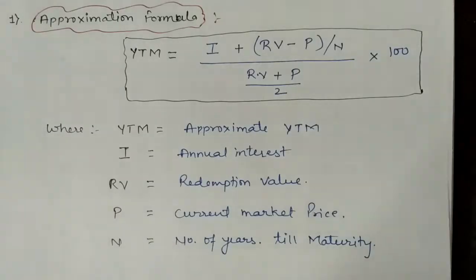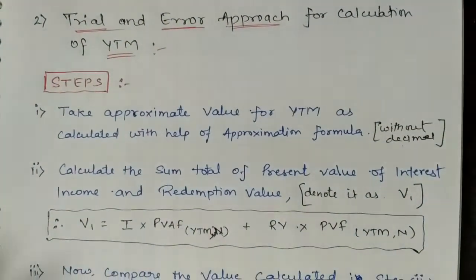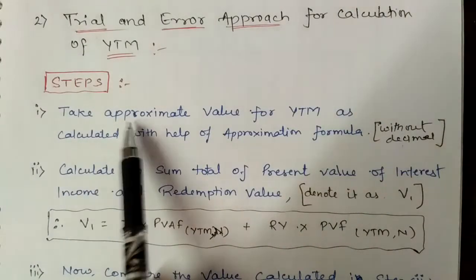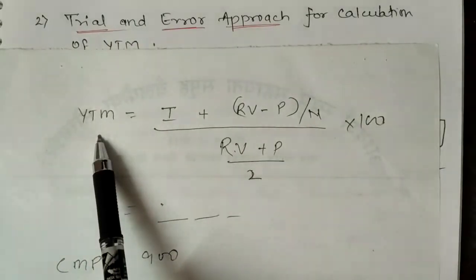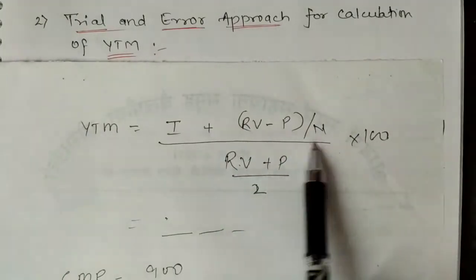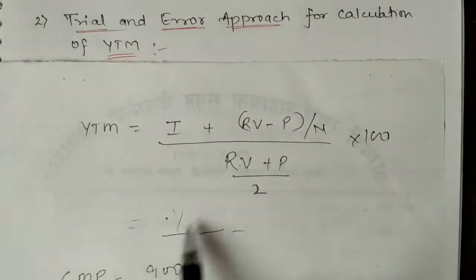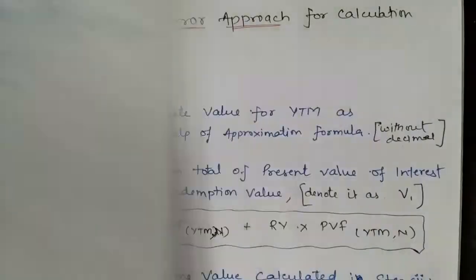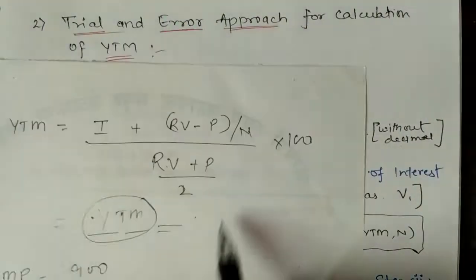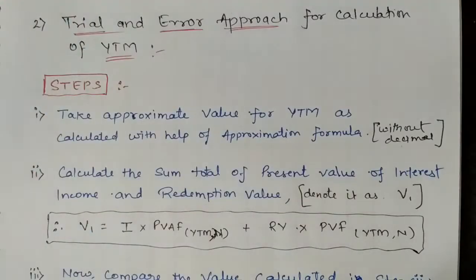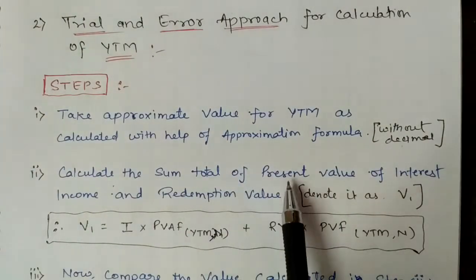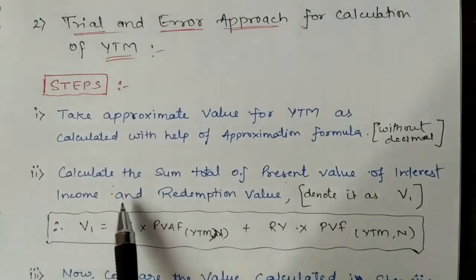For the trial and error approach, follow these steps. Step 1: Take the approximate YTM calculated using the approximation formula, rounded off without decimal — for example, if it is 11.6, round to 12; if 11.2, round to 11. Step 2: Calculate the sum total of the present value of interest income and redemption value, and denote it as V1. This V1 is the bond's price estimated using the approximate YTM.